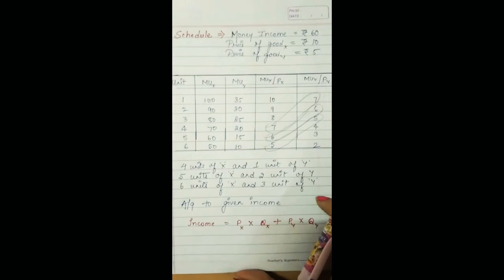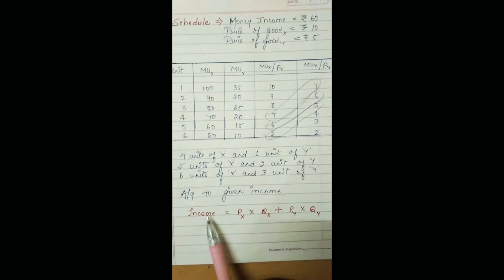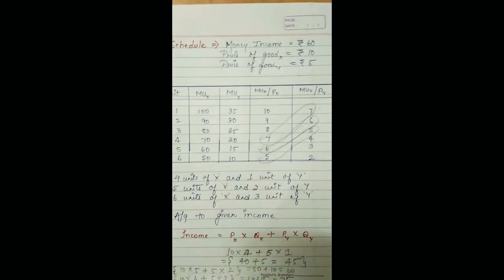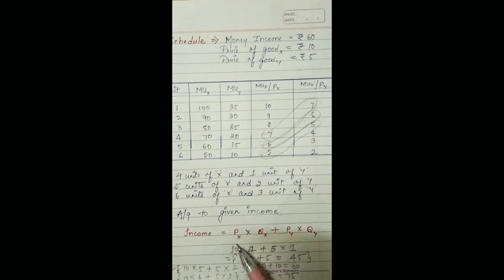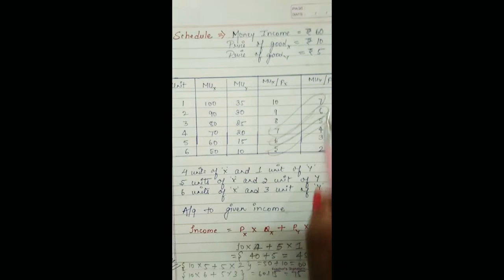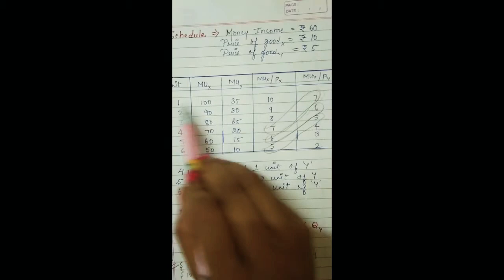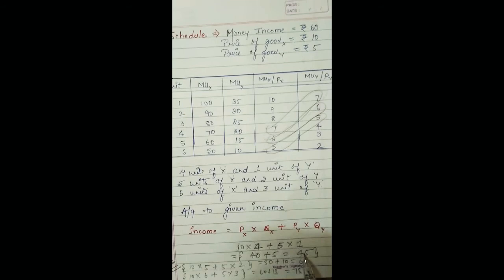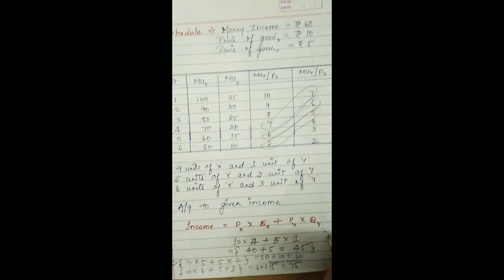We must find where the consumer attains maximum satisfaction subject to his given income: Income = Px × Qx + Py × Qy. Case 1: Px × Qx + Py × Qy = 10 × 4 + 5 × 1 = 40 + 5 = 45, which is not equal to the consumer's income of 60. Hence this point is not valid.